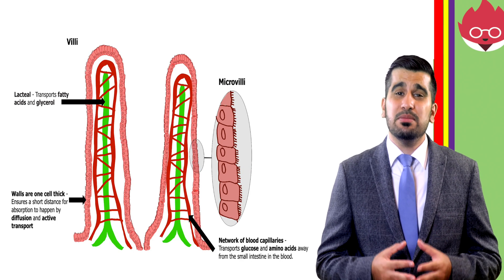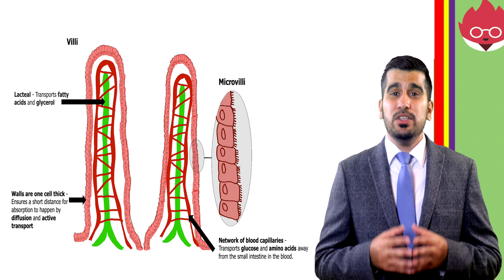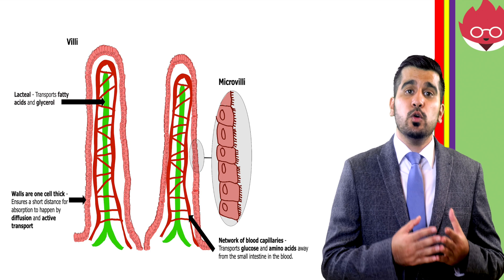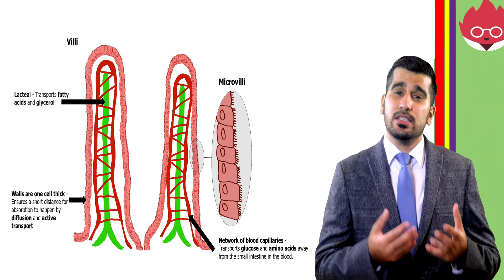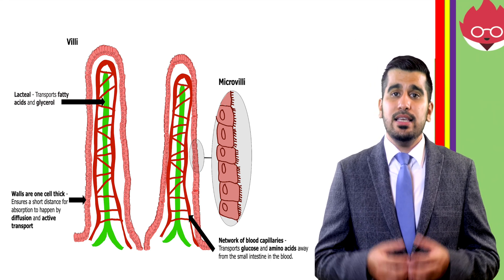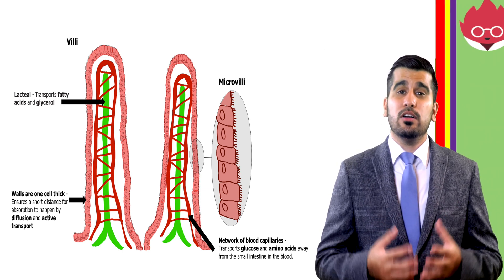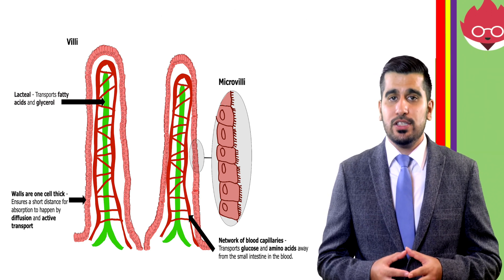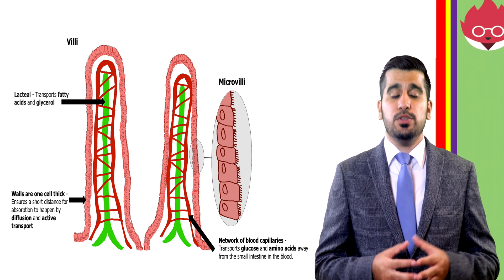In the digestive system, the intestines are made from villi, which in turn are made from microvilli, which increases the surface area to volume ratio to allow digested food to be absorbed into the bloodstream. When we talk about digested food, we're talking about nutrients such as proteins and carbohydrates broken down through digestion, which can then be delivered to cells around the body. The intestines also have a network of blood capillaries that allows for transport of molecules to and from the exchange surface. Their cell walls are one cell thick, which helps reduce the diffusion distance.